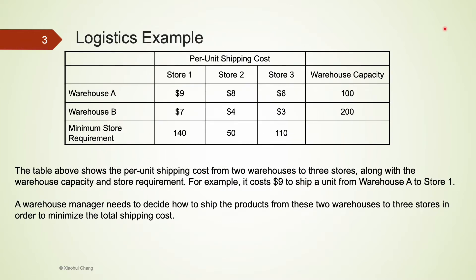A warehouse manager is responsible of two warehouses, warehouse A and warehouse B. The manager needs to decide a delivery plan to ship products from these warehouses to three stores: stores 1, 2, and 3. An optimal delivery plan is one that minimizes the total shipping cost. The table above shows per unit shipping cost from two warehouses to three stores along with the warehouse capacity and also store requirement.